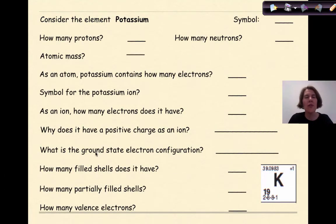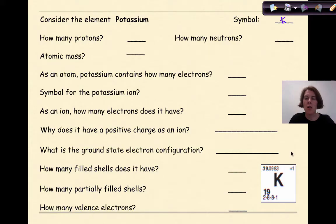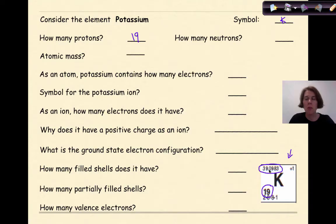Now let's review some general atomic structure concepts. Consider the element potassium — symbol K. How many protons does potassium contain? We can look at the reference table: the atomic number for potassium is 19, and atomic number always equals the number of protons. So potassium has 19 protons. What's the atomic mass? The mass number on the reference table — rounding to the nearest whole number — is 39.